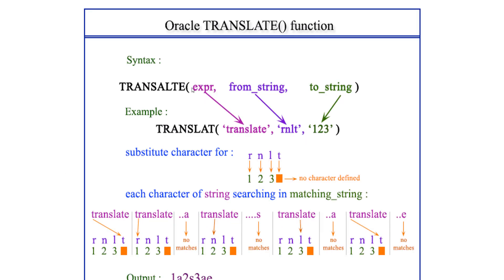In TRANSLATE, the expression is your input string, the from_string specifies which characters you want to change, and the to_string specifies which character the from_string character should be replaced with.